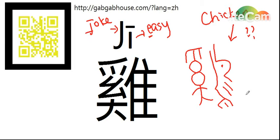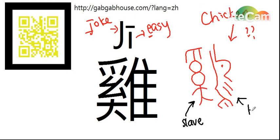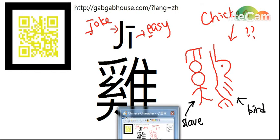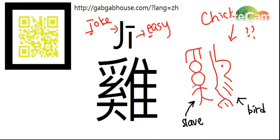Originally, the form is this one. For this form, this part means a slave, and this part is a bird.